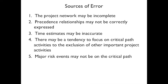Sources of error in scheduling: the project network may be incomplete — you may have forgotten something. Precedent relationships may not be correctly expressed — for example, you say you can't start B before A, but in reality you can start partway through. Time estimates may be inaccurate — saying A takes 10 days when it really takes 12. There's also a tendency to focus on the critical path while neglecting other important activities, and major risk events may not even be on the critical path.